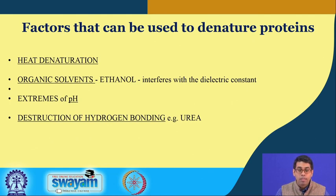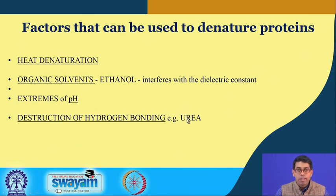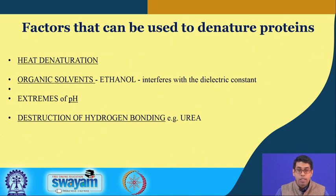If enough electrostatic interactions are lost, a protein can denature or unfold. Finally, there are several chemical reagents which can be used to denature protein. A very good example is urea, which interferes with the hydrogen bonding pattern of a protein and also interferes with how water molecules are arranged around the protein. All these disruptions lead to the unfolding of a protein molecule.